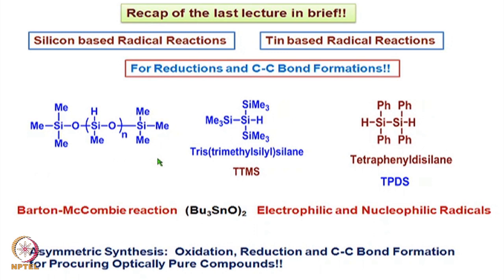We used PMHS, which is polymethylhydrosiloxane. Then tris-trimethylsilylsilane (TTMS) and tetraphenyldisilane (TPDS) in various kinds of reactions, and we saw how they can be substituted in place of tributyltin hydride. We also looked at the Barton-McCombie reaction and discussed the utility of catalytic amounts of tributyltin oxide using N-butanol as a solvent and phenyl thionocarbonate based substrates.